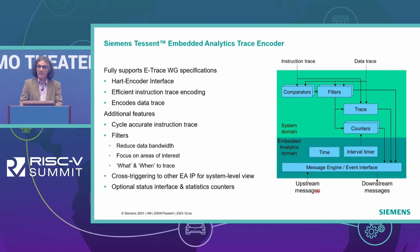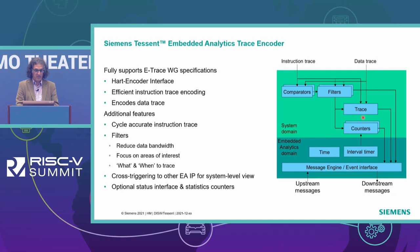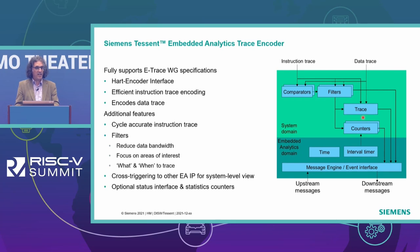What's inside our trace encoder? Our trace encoder fully supports the Efficient Trace, or E-Trace, workgroup specification — starting with the hart encoder interface, creating efficient instruction trace encoding, and enabling data trace. Additional features above the specification standard include cycle-accurate instruction trace capabilities mentioned earlier, and programmable filters to allow you to focus on just the area of code that you care about, reducing the amount of trace carried off-chip and the amount of data you need to analyze.